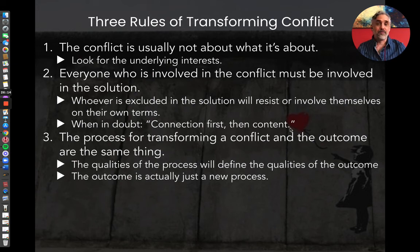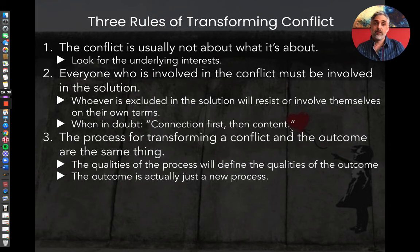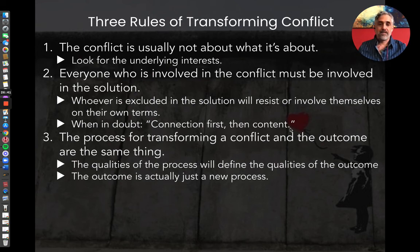The second rule of conflict is that everyone who's involved in the conflict is going to have to be involved in the solution — there's no way out of this. Anyone who's excluded in the process of finding a solution is either going to resist the solution you come up with, or they're going to involve themselves on their own terms by coming up with their own solution, resisting it, or changing things down the road. And when in doubt, work on connection first, then get into the content.